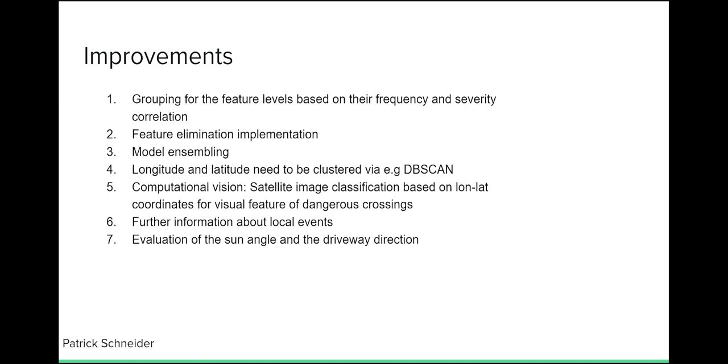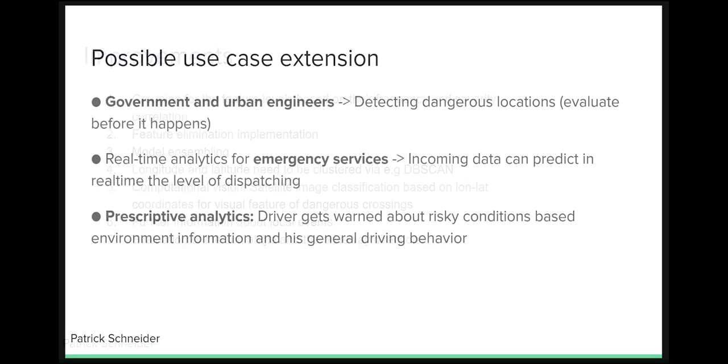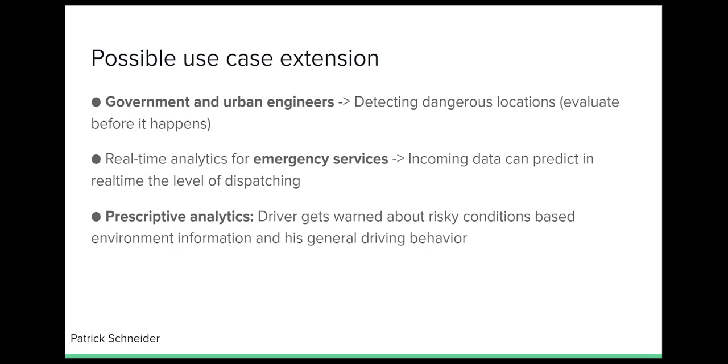Possible use cases could include the historical analysis of dangerous locations, which could help governments to improve their urban environment. Another use case could build around the emergency services for accidents, which can be based on the environment data and car involvement. The dispatching process could be improved. The here presented last scenario could contain environment, driver, car, and route information to proactively warn the driver about the situation where they should take care or be cautious.